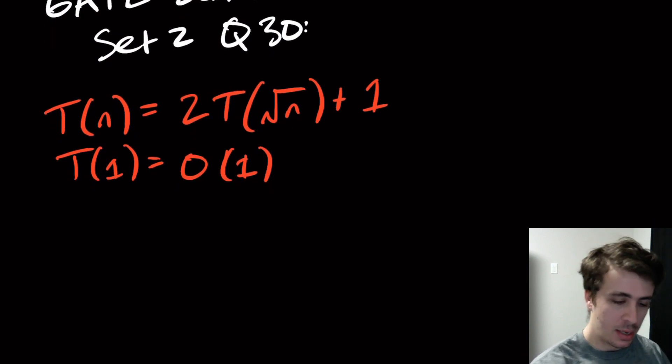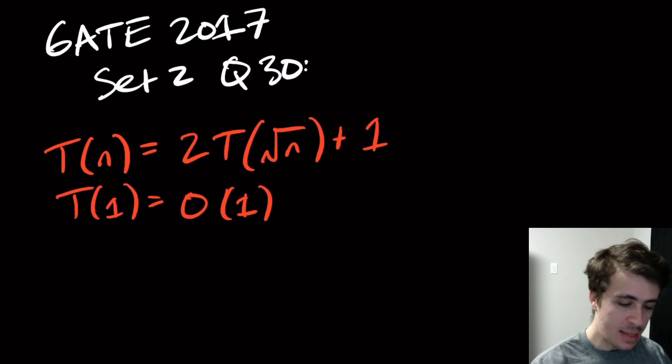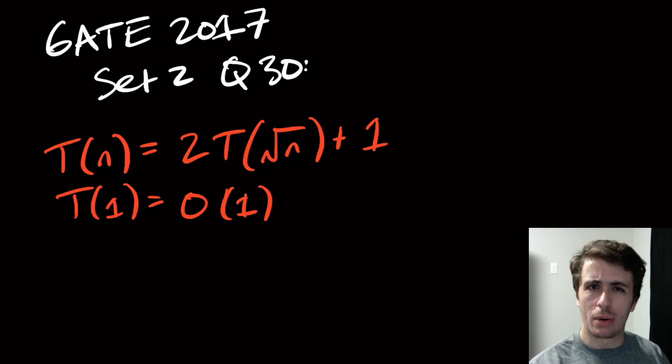We would think can we apply the master theorem to this? The answer is no, or at least not directly, because we have the a term out front, that's 2 subproblems of identical size. Here's f(n), no problem. But this right here is not of the form n over a constant. It is n over √n, but a and b here have to be constants, and √n is not n over a constant.